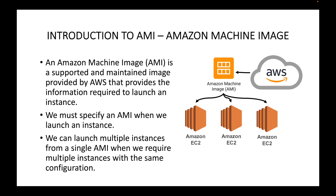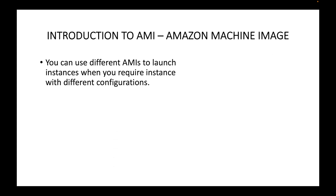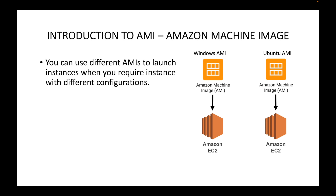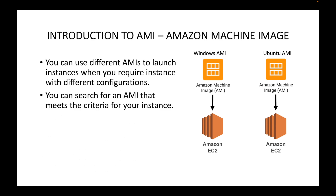For example, if you want multiple Ubuntu machines, you can use the same Ubuntu AMI and launch multiple EC2 instances from it. You can also use different AMIs for different configurations. If you want a Windows EC2 instance, use the Windows AMI. If you want Ubuntu, use the Ubuntu AMI. Likewise for Red Hat or CentOS, we use the respective AMIs to launch the instances we want.